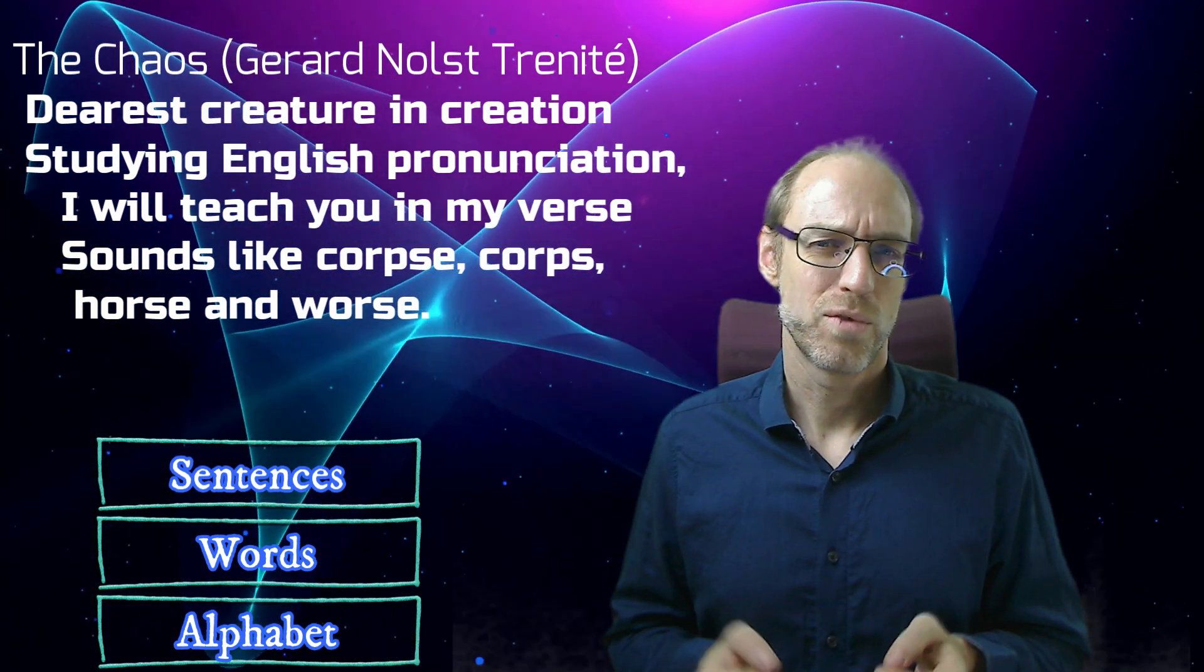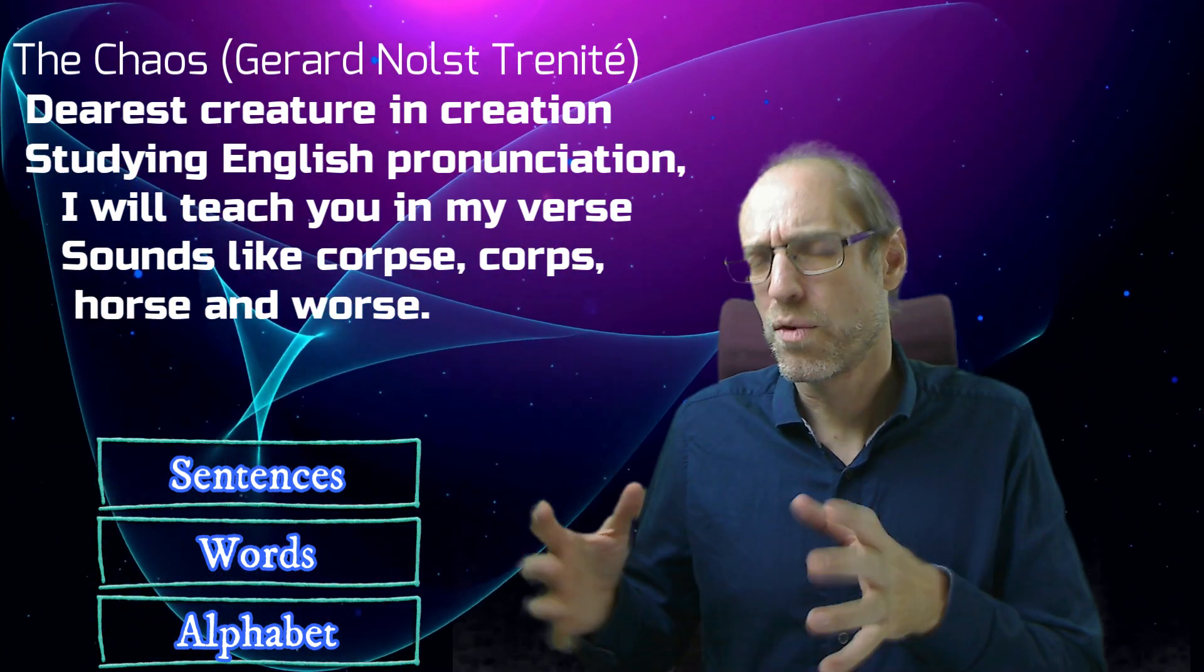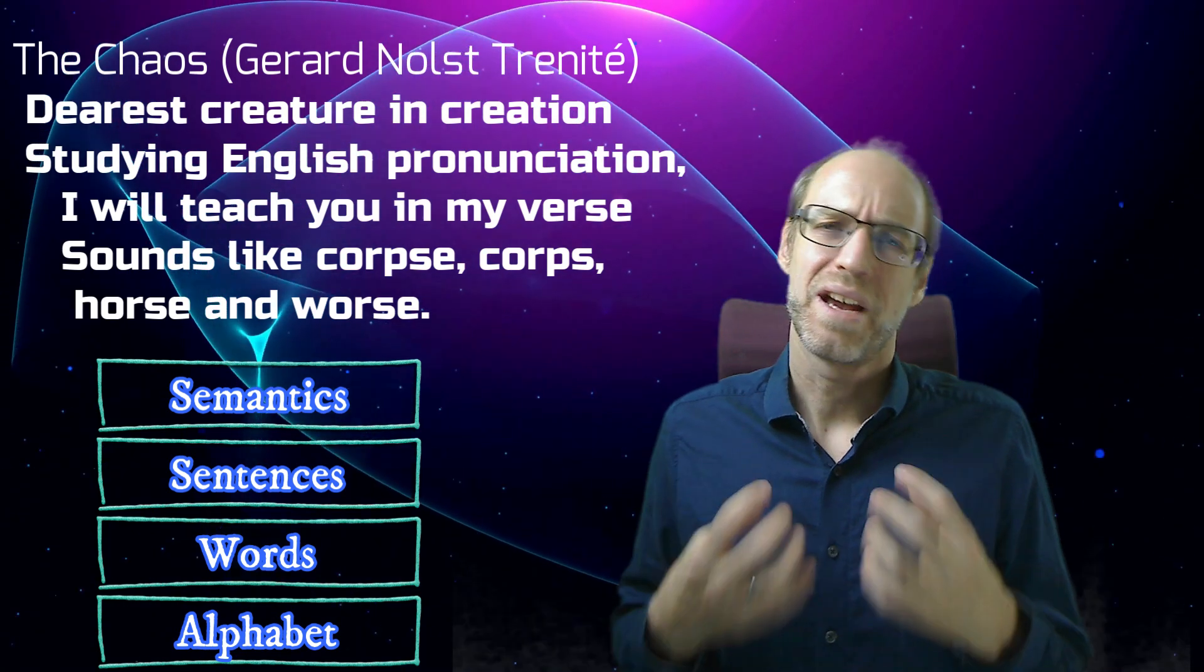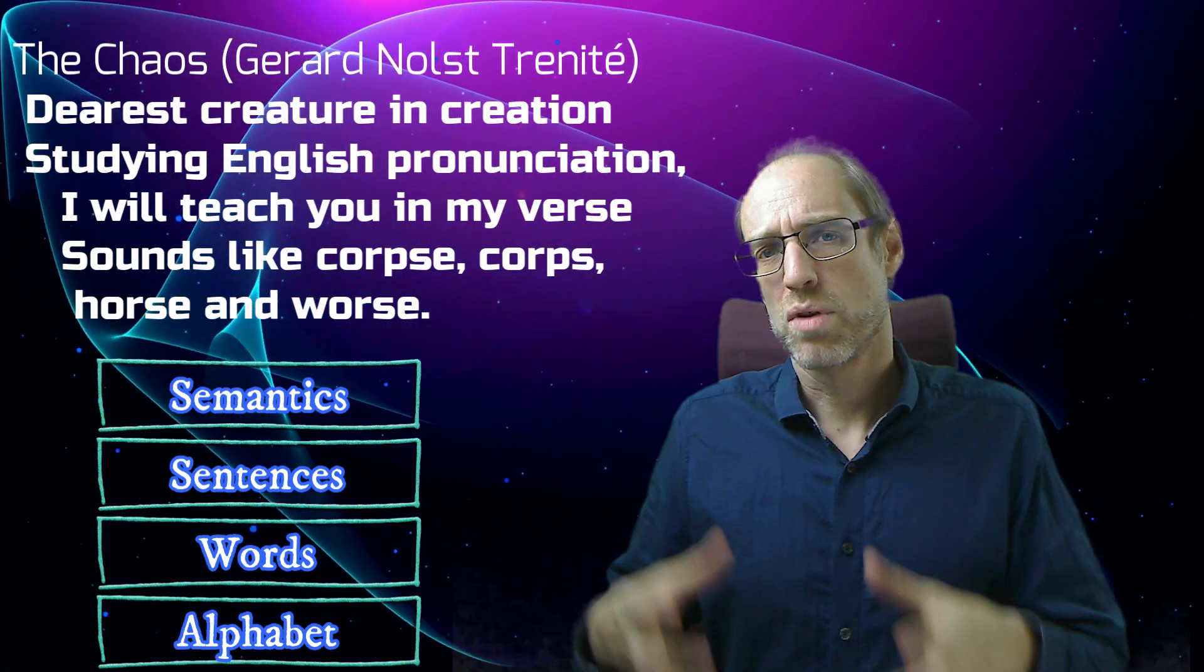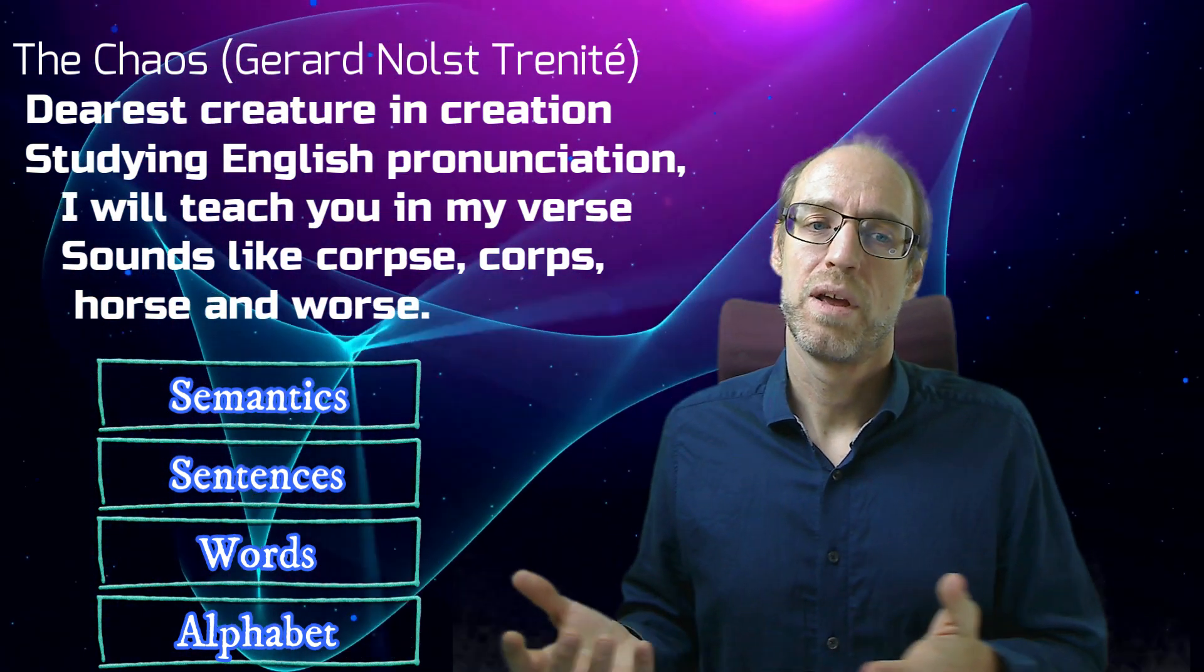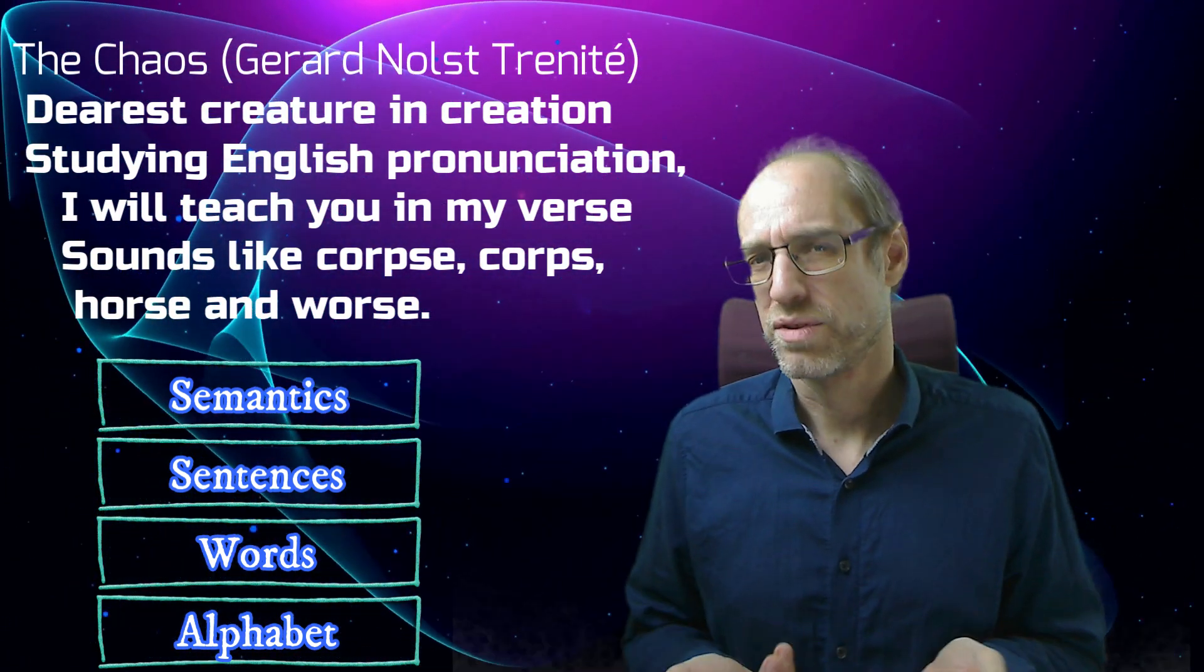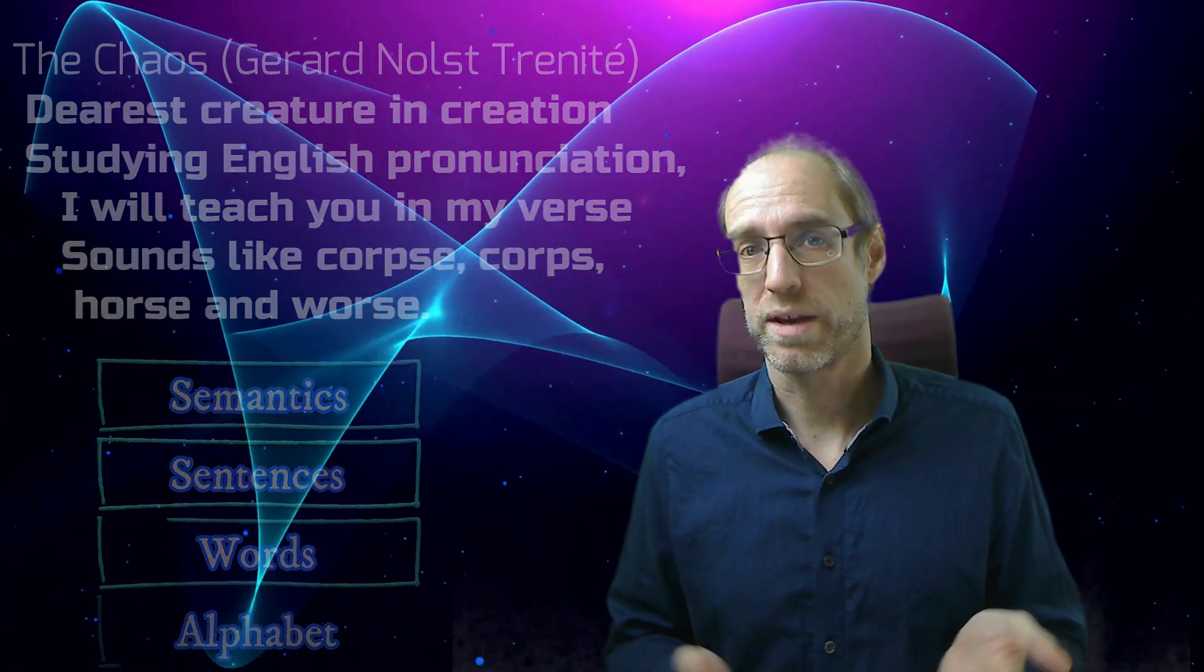However, they would have no idea about what they read, because without the fourth level, you cannot understand anything. Level four is the semantics. In this case, the author clearly tells us that the text is all about how to pronounce English words. As you can see at the end, horse and verse are pronounced completely different. You really need to understand the words in order to pronounce them correctly.